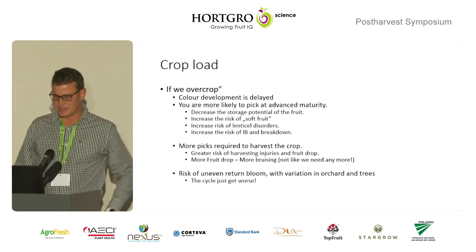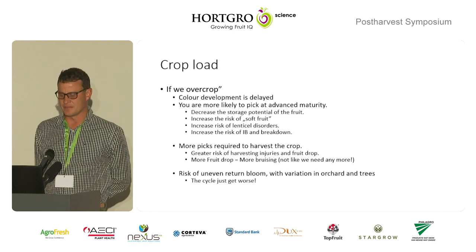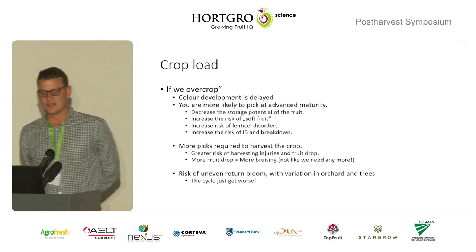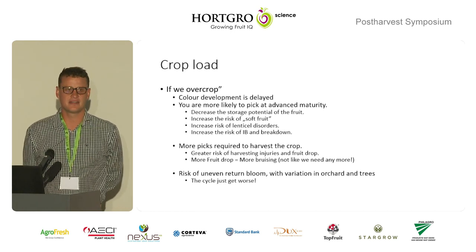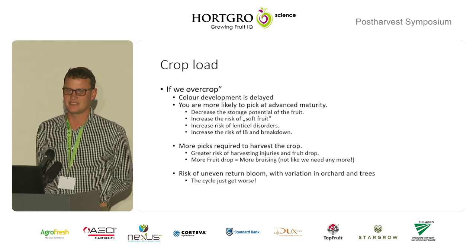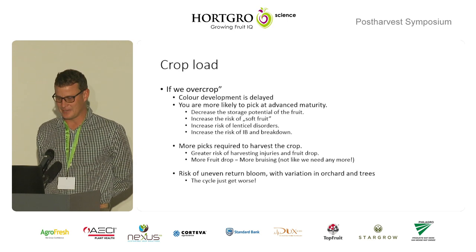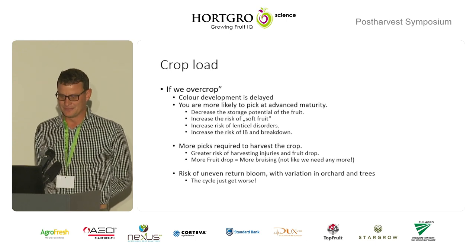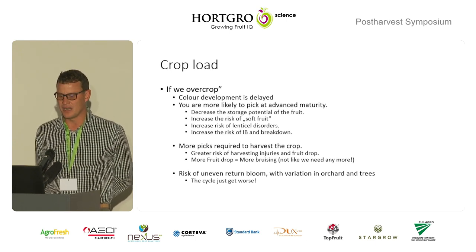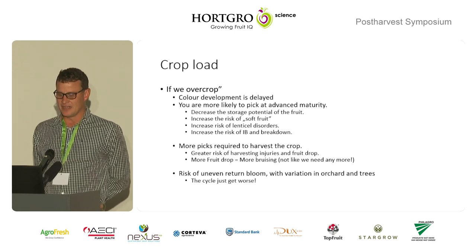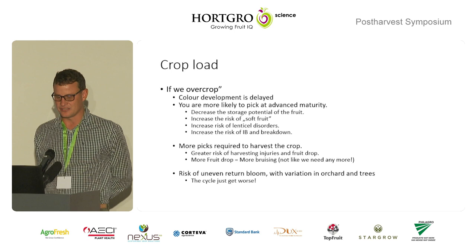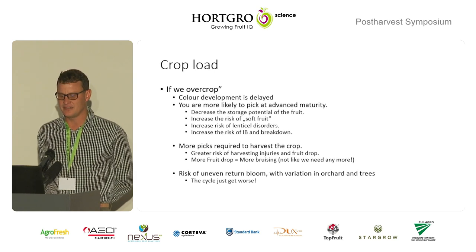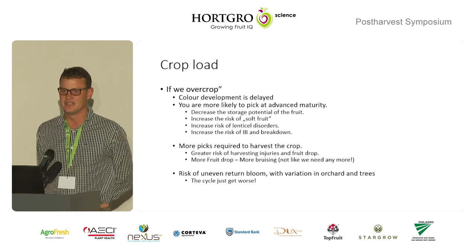If we look at crop load — where we crop the tree to its optimum position — let's look at what happens if we over-crop. If you over-crop, your colour development is delayed. If you delay your colour development, you are more likely to pick at advanced maturity. In this case, you would decrease your storage potential, increase your risk of fruit going soft, increase your disorders of lenticels, internal browning, breakdown — the list goes on.